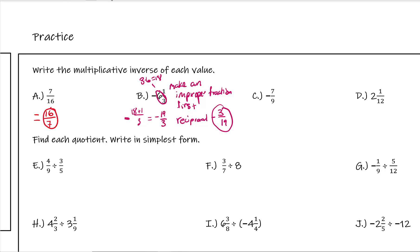Example C is negative 7 ninths — why don't you give it a try? When we do these, we don't need to change the positive or negative sign; we're just flipping the fraction. So instead of negative 7 over 9, it's going to be negative 9 over 7.